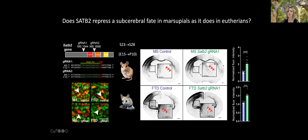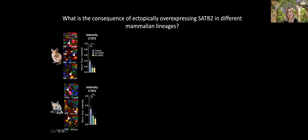With both SATB2 guide RNAs, we saw an increase in axons traversing through the internal capsule when we knocked down SATB2 in both species, suggesting its role as a repressor of sub-cerebral axon fate identity is conserved between the two species. We also overexpressed CTIP2 and saw the same phenotype. When we overexpressed SATB2 — using each species' version in both species — in all cases overexpression of either species' SATB2 in either species resulted in decreased CTIP2 fluorescence intensity.